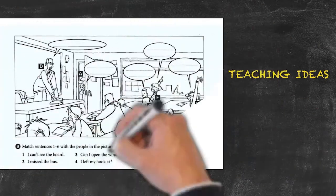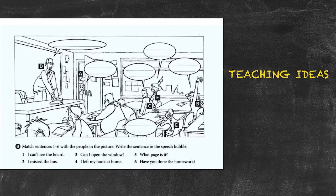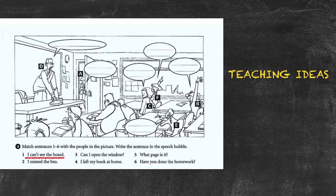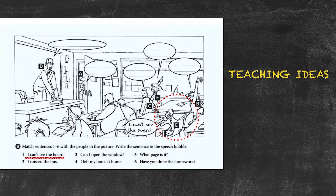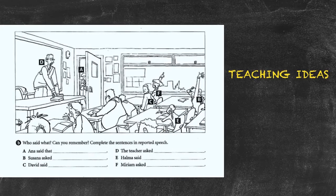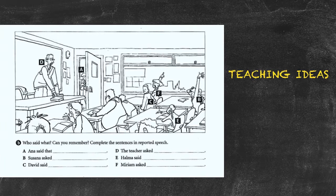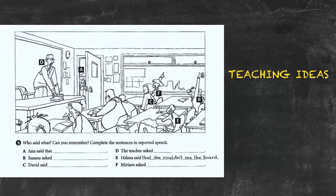Here's an additional teaching idea for reported speech — done in two phases. The first phase challenges students to match a statement with a certain character in a picture. Students see the statement 'I can't see the board' and have to assign it to the most logical person — probably the short girl sitting behind the big man. They continue matching statements with the correct caption. Then in the second phase, students are asked to report the speech, hoping to produce: 'Helma said that she couldn't see the board.' This continues for each person in the picture.